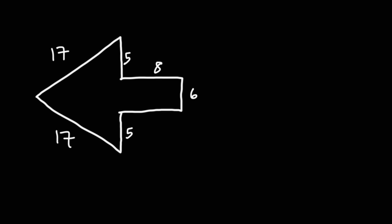Now let's work on this example — we want to find the area of basically an arrow shape. It might be helpful to draw a line here. We have a rectangle with a length of 8 and a width of 6. 8 times 6 gives us 48 square units.